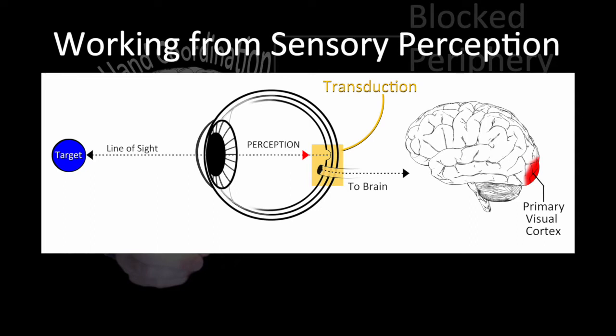Vision actually happens in the primary visual cortex. When you're looking right at a target, the information about the target is being translated more clearly.